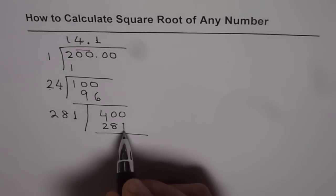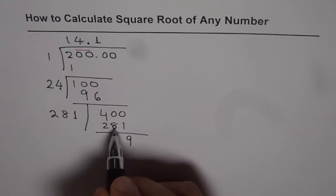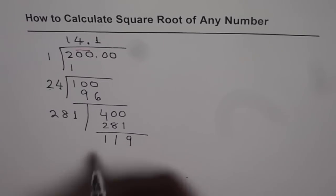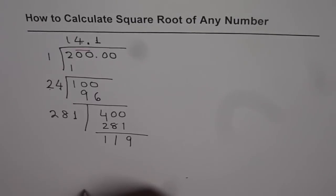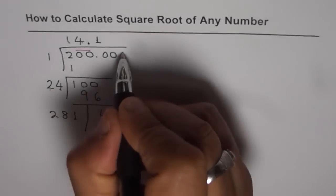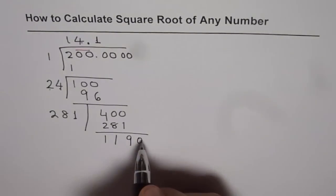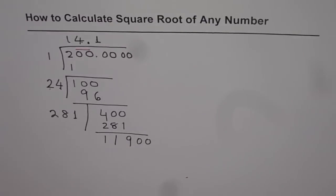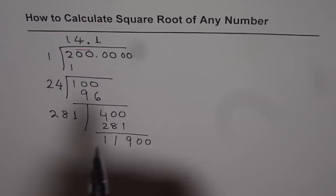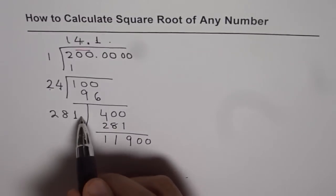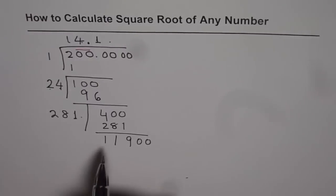10 take away 1 is 9, 9 take away 8 is 1, and you have to take away 2 from 3, you get 1. We can go to two decimal places. Let's put two more zeros. Bring down these zeros.